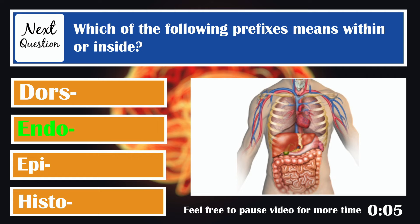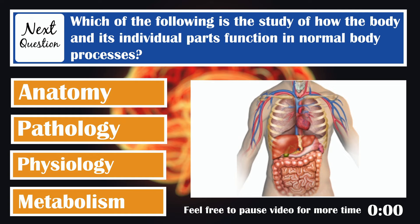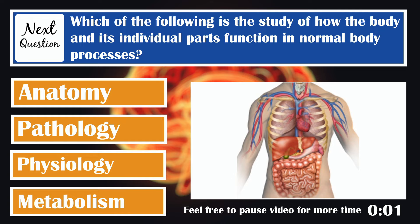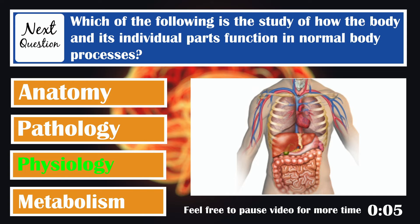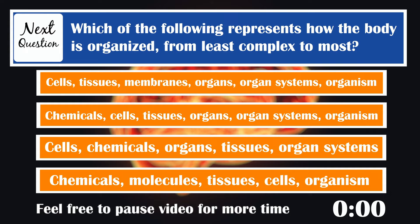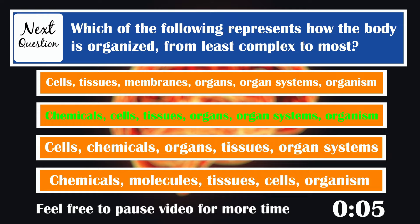Which of the following is the study of how the body and its individual parts function in normal body processes? Physiology is the study of how the body and its individual parts function in normal body processes. Which of the following represents how the body is organized from least complex to most complex? The human body is organized following a hierarchy from least to most complex: chemical, cellular, tissue, organ, organ system, and organism levels.